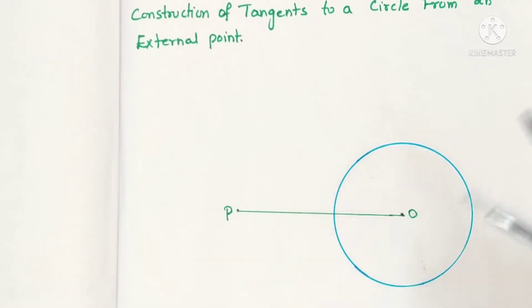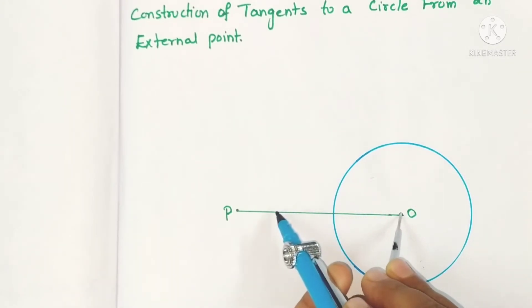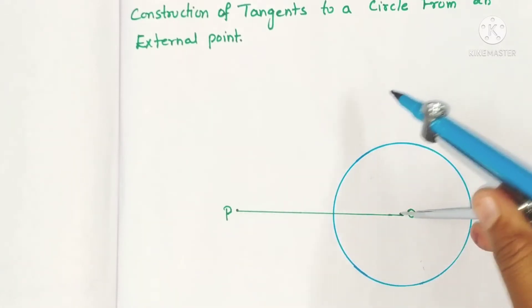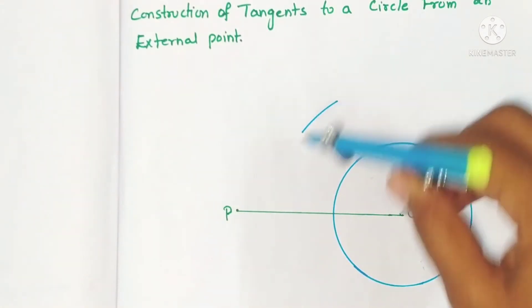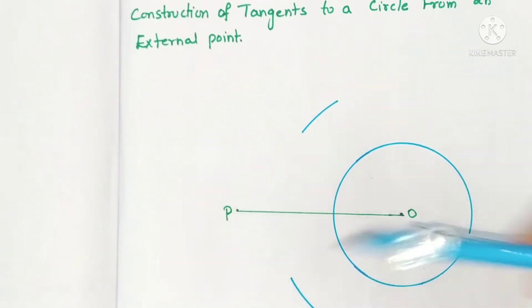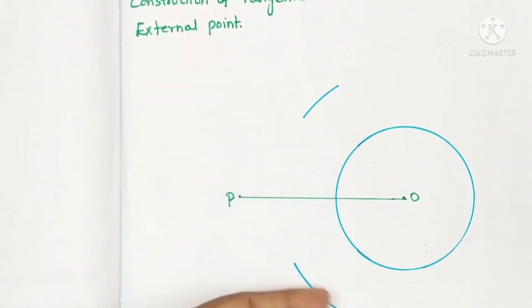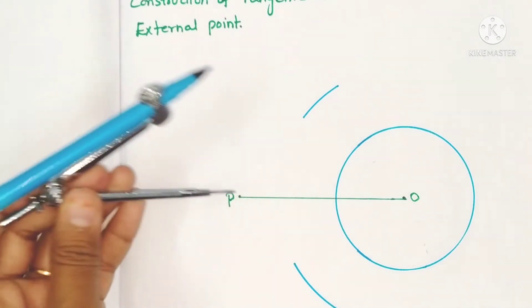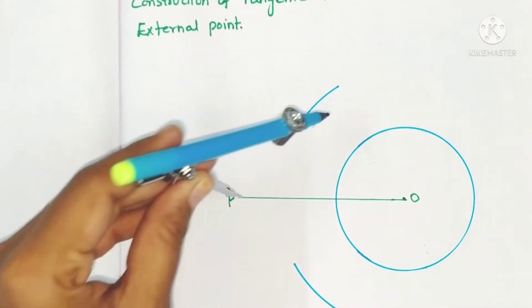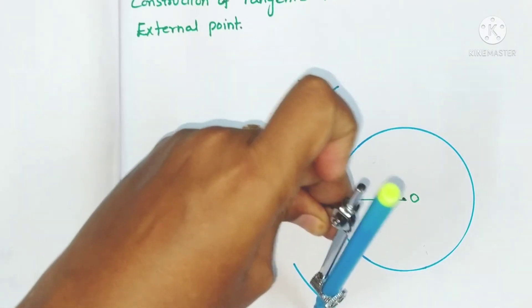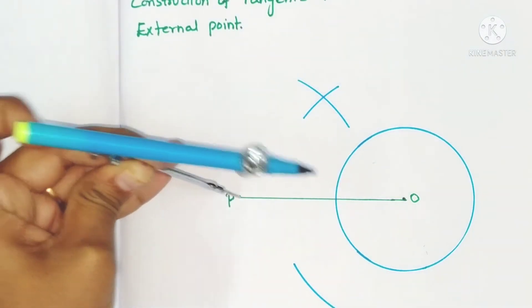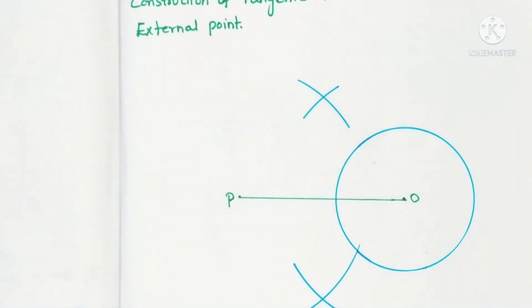So take the compass, and to draw the perpendicular bisector, take the radius more than half. From O, draw the arc on two sides of the line, above the line and below the line. Same process with the same radius from P also. This is the perpendicular bisector. Now take the scale.